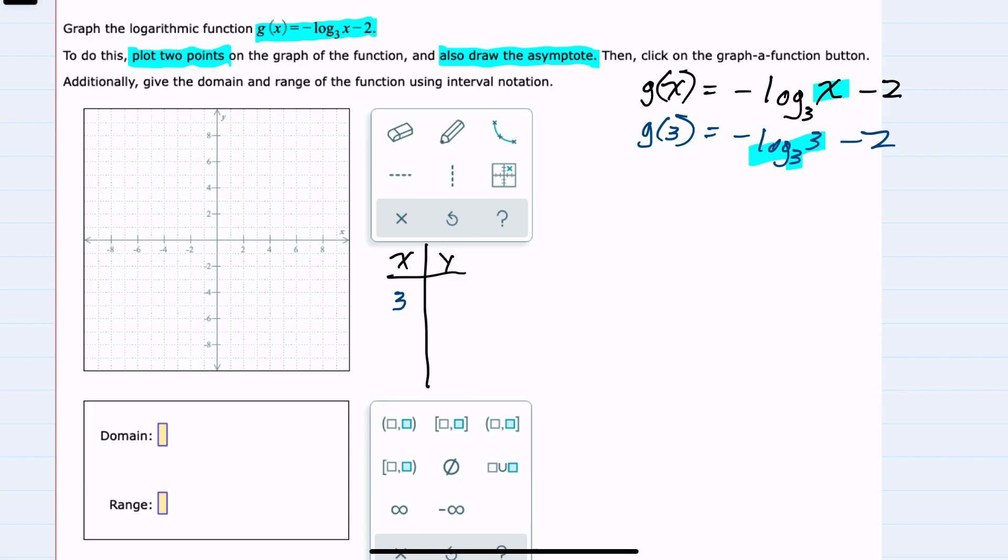And since 3 to the first power is 3, then our logarithm, which has the negative in front of it, will simplify to just 1. And I can bring down the minus 2. Negative 1 minus 2 is negative 3.